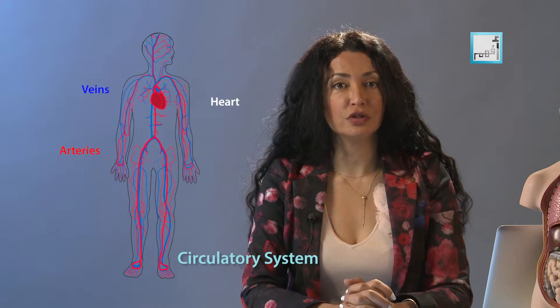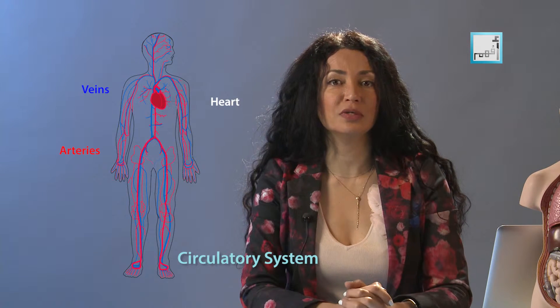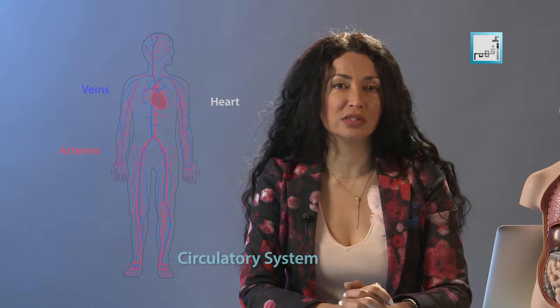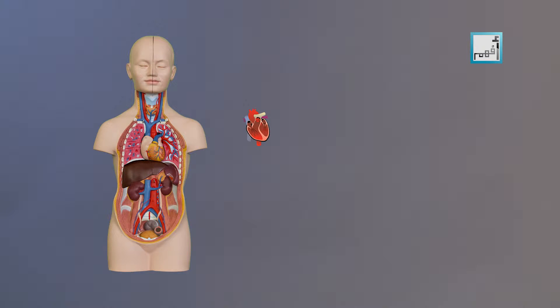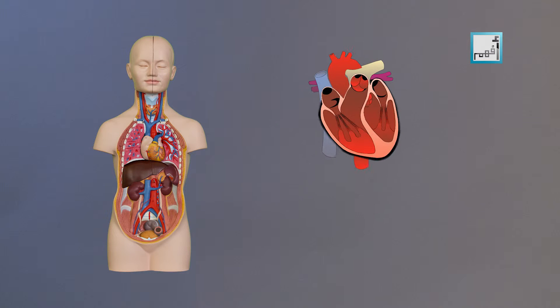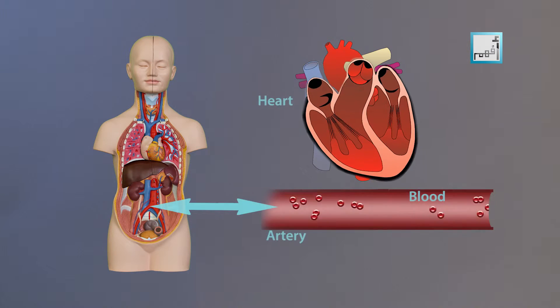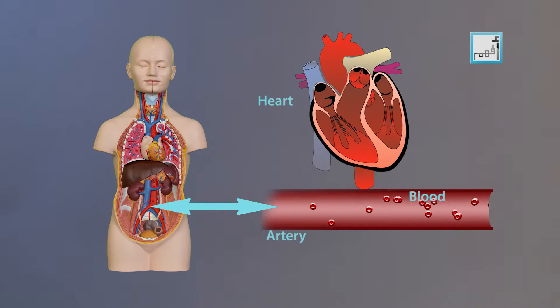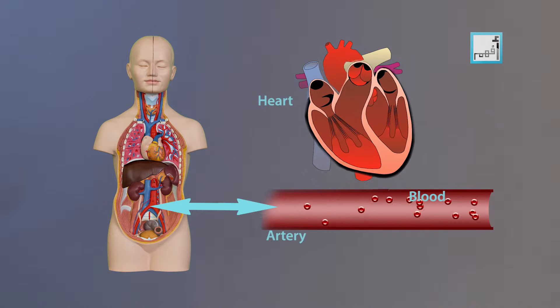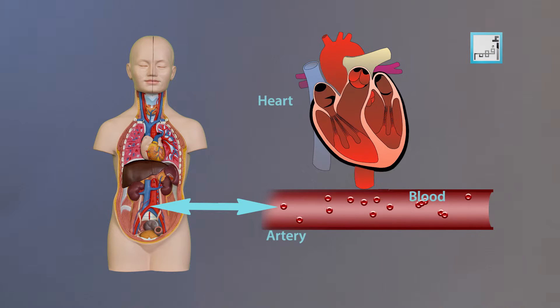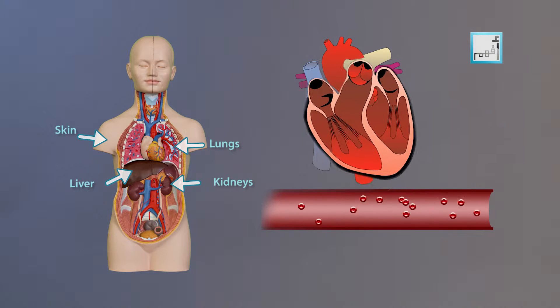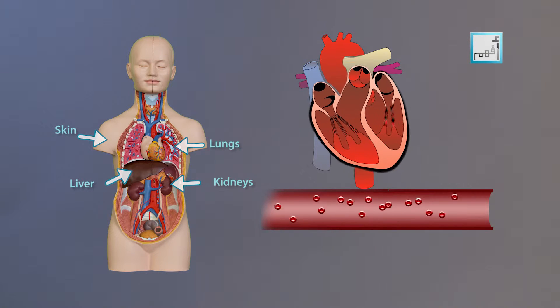In order to understand the subject of blood pressure, we first have to know some information about the circulatory system. The heart is a muscle the size of your fist. It constantly pumps blood through the blood vessels, and the blood carries oxygen and nutrients to the body's organs and drops off waste products to be filtered out by the kidneys, liver, lungs and skin.